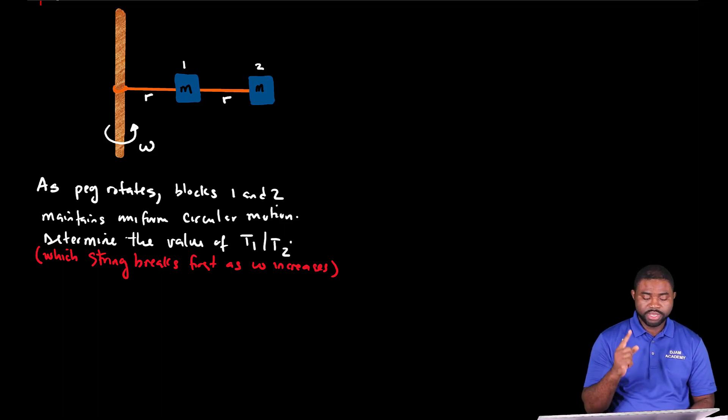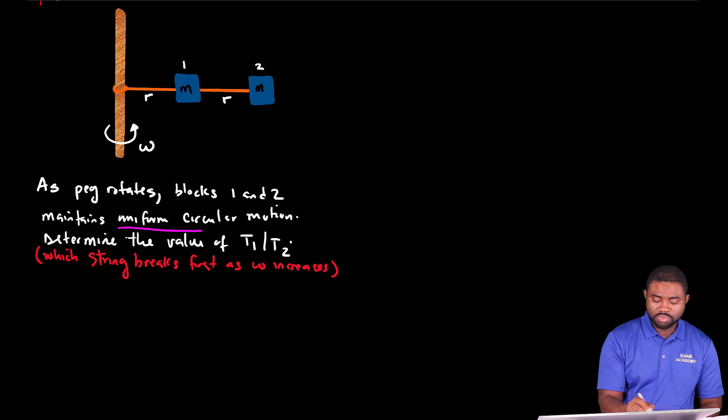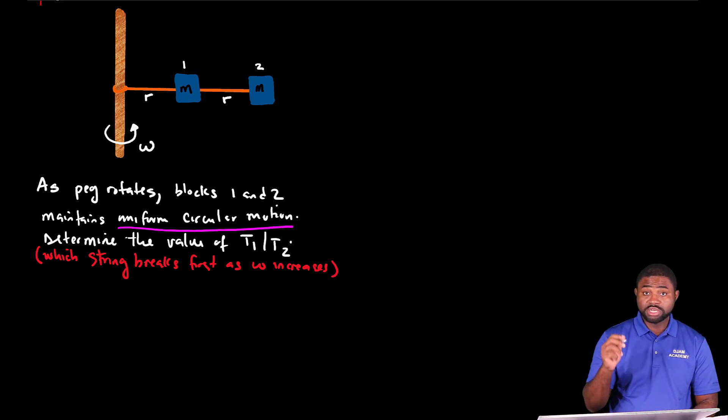As the peg rotates, block one and two maintain a uniform circular motion. The phrase uniform circular motion indicates that the angular velocity and the speed of the block around the circle remain constant.